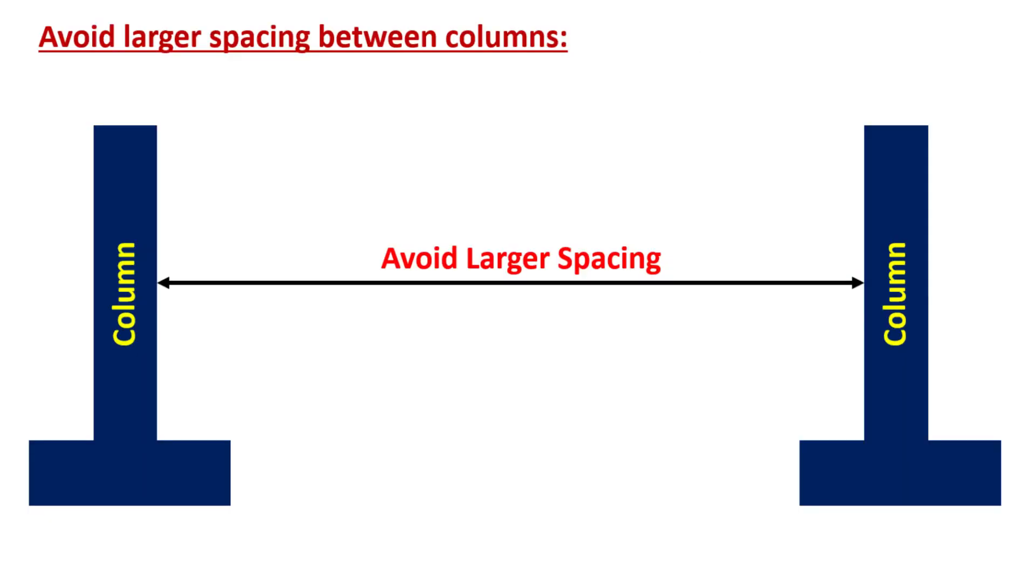It is also important to avoid larger spacing between columns. Larger spacing between columns not only results in longer spans for beams, but also increases the load on the columns, leading to bulky columns in the lower floors of a multi-storey building. The use of larger column sections may cause offsets from walls, thus obstructing the available floor area.